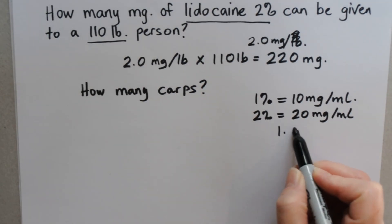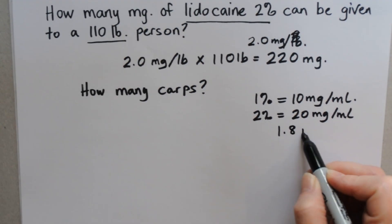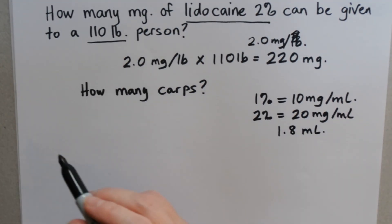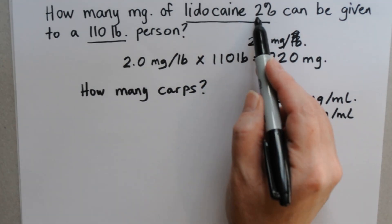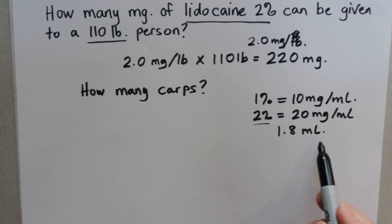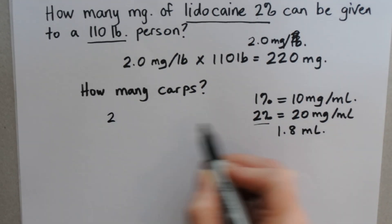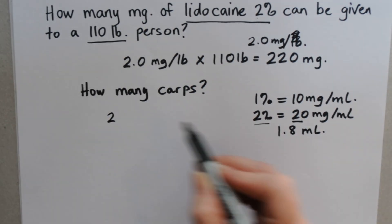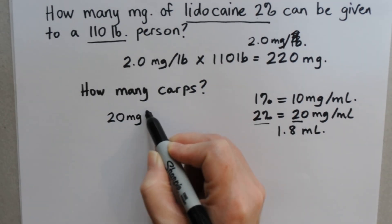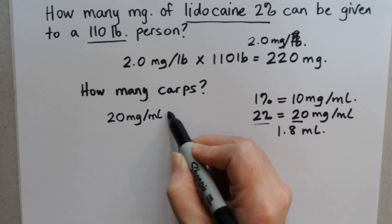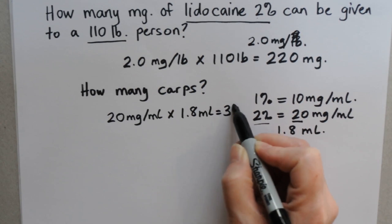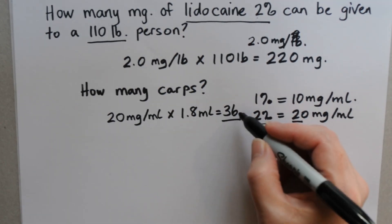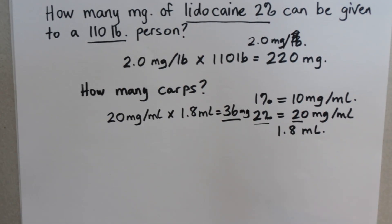We also need to know that the typical carpule has about 1.8 milliliters. So to figure out how much drug is in a single carpule at 2%, we multiply 20 milligrams per milliliter by 1.8 milliliters, and we get 36. So there are 36 milligrams in the typical carpule of a 2% anesthetic.